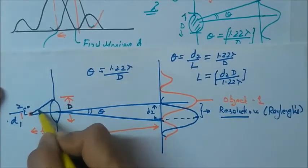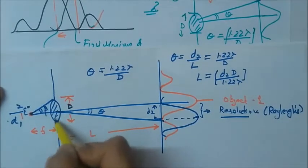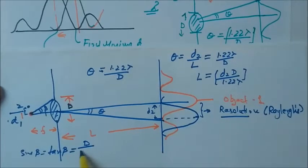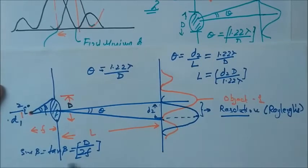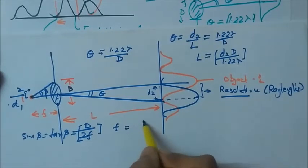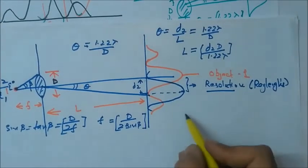Now let this angle beta which the object is making with the aperture, and sin beta equals tan beta because beta is small. Tan beta is D upon twice F. So F will be equal to D upon twice sin beta.